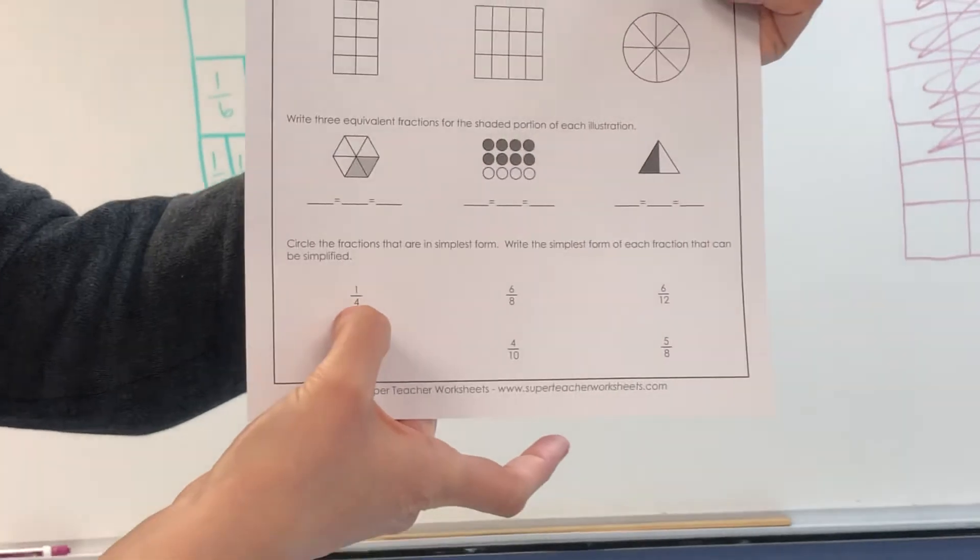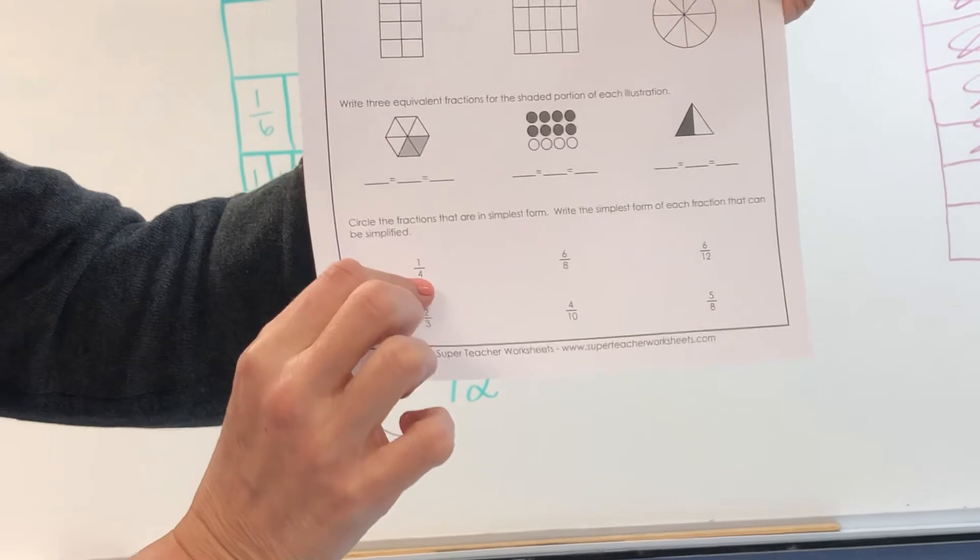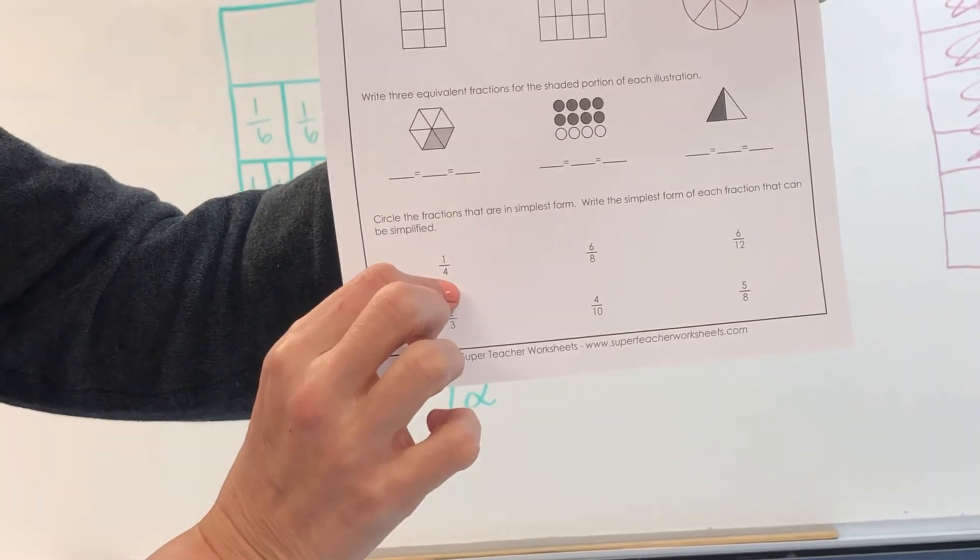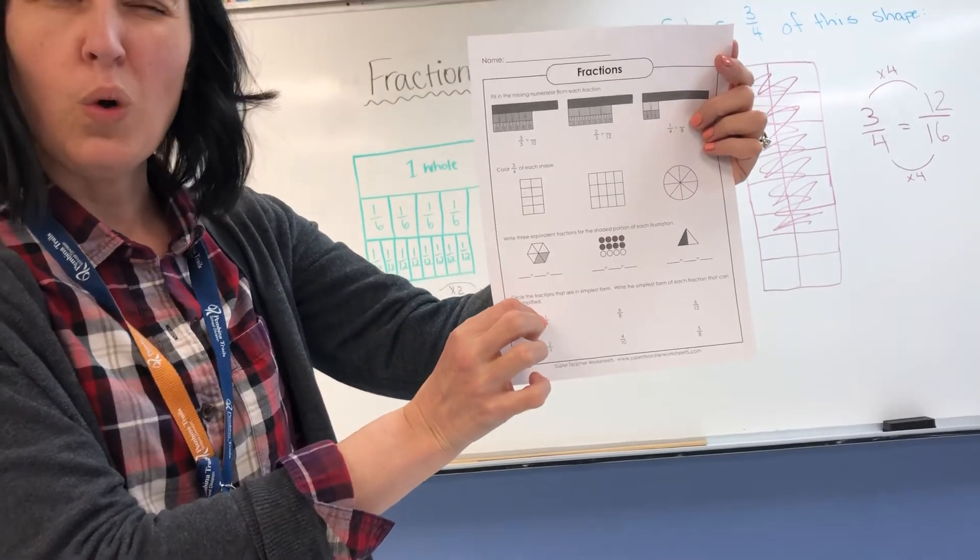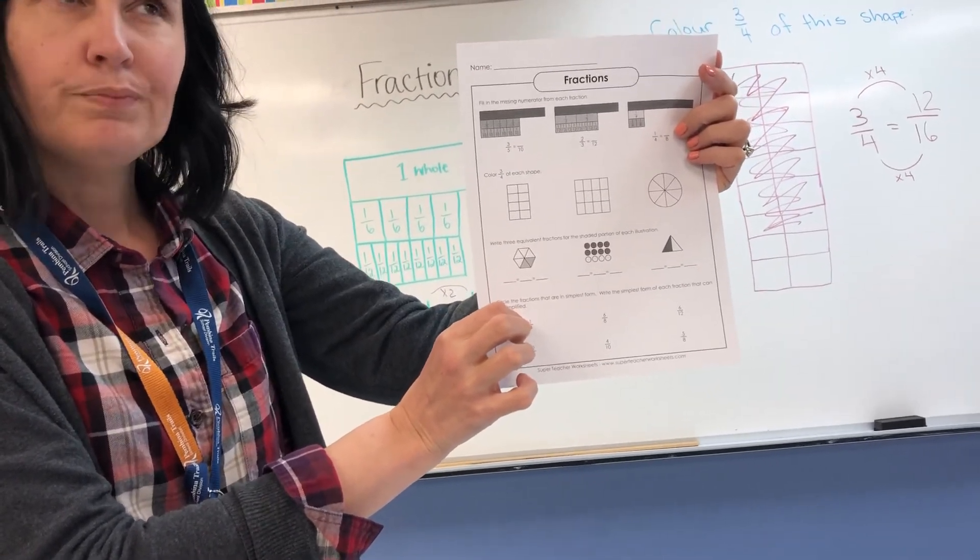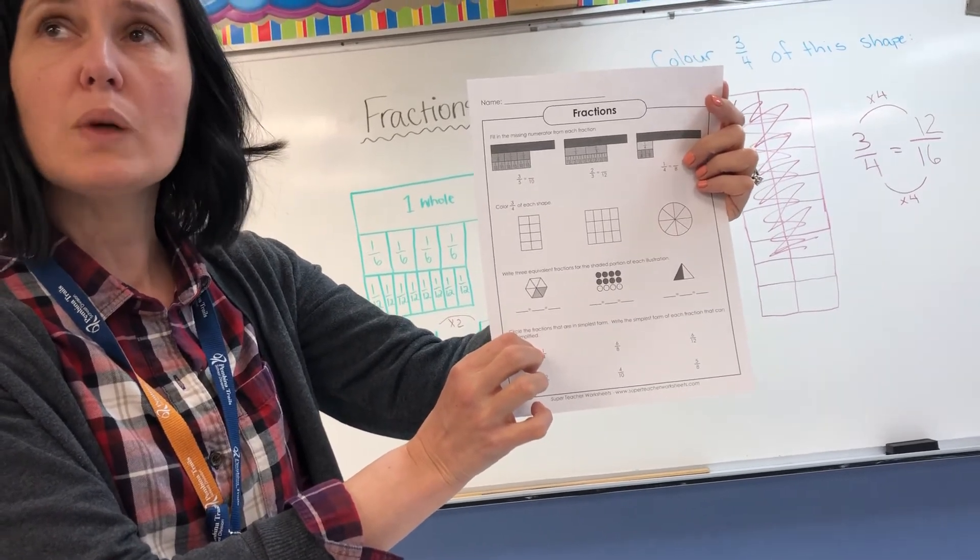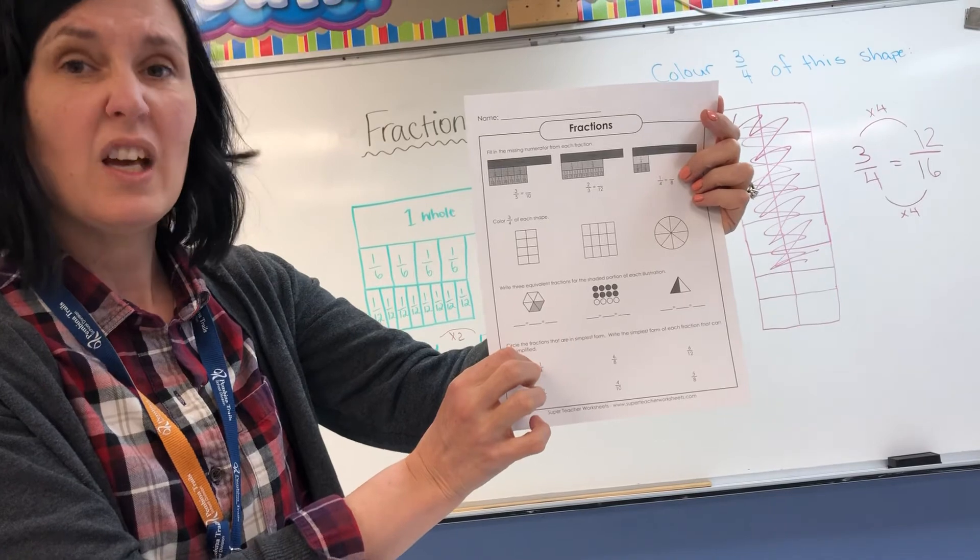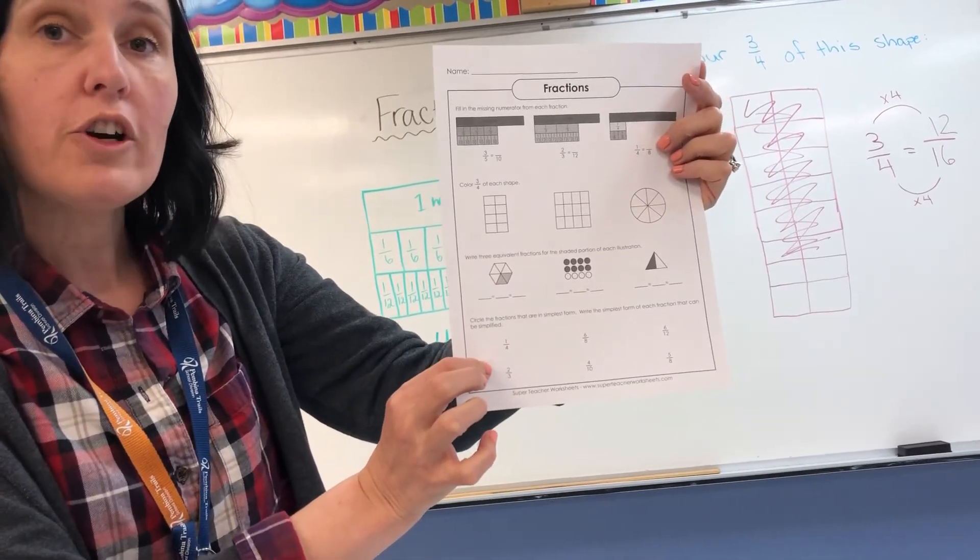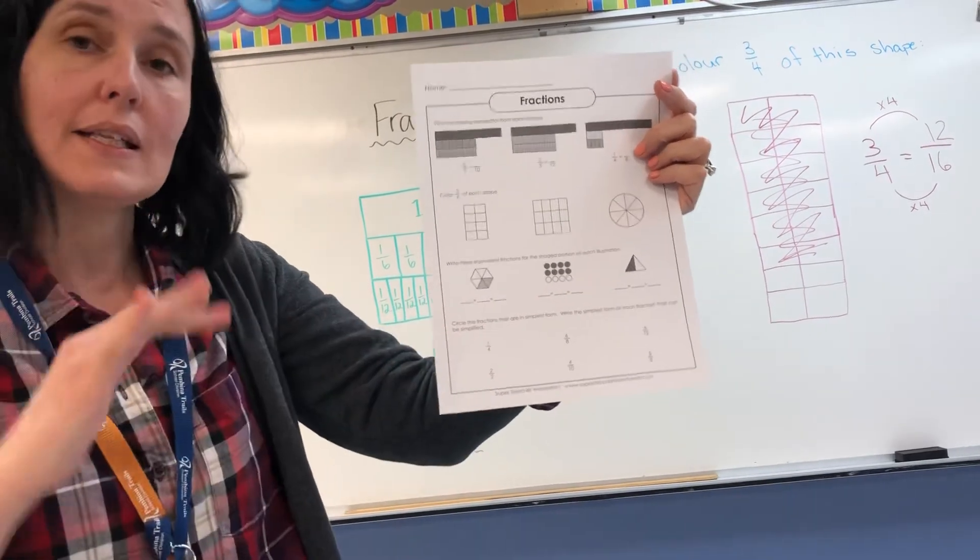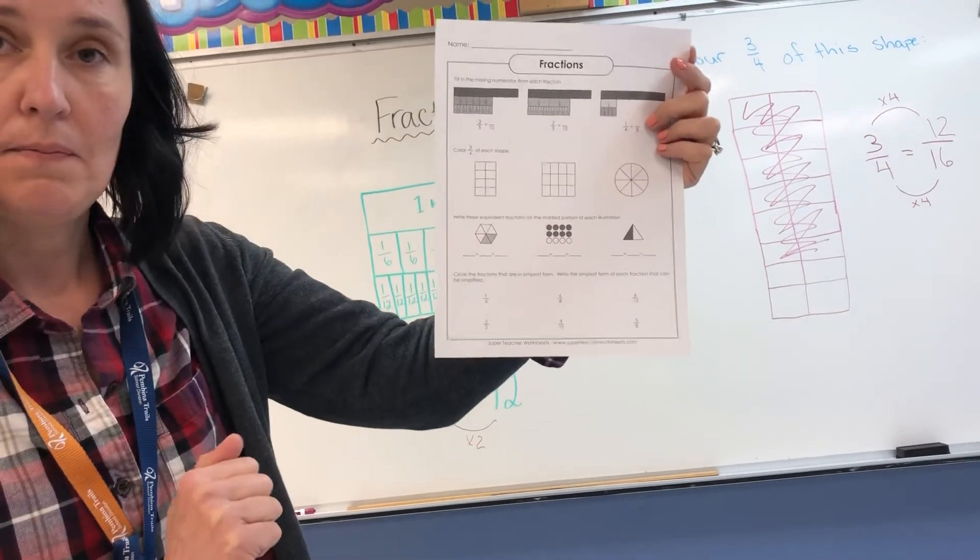So for example, one fourth. If we divide four by two, we get two. But can we divide one by two and get a whole number? No. Because if we divided one by two, one divided by two would give us a decimal. It's half. So we can't actually make this fraction any smaller. One quarter, one fourth is already in its simplest form. So you're going to want to circle that one.